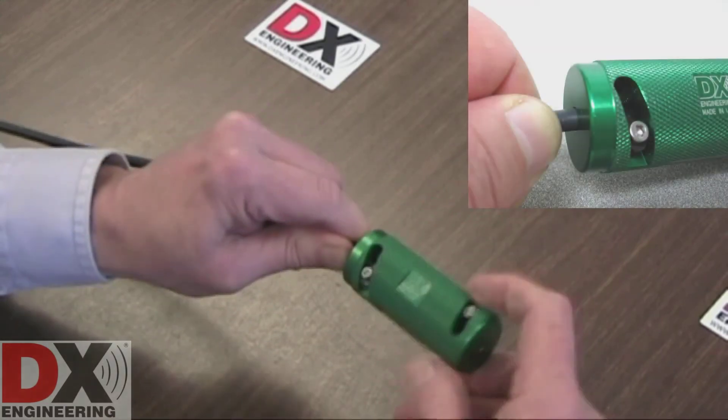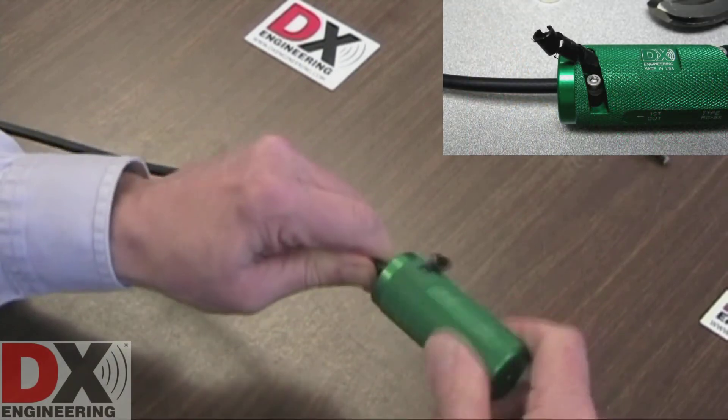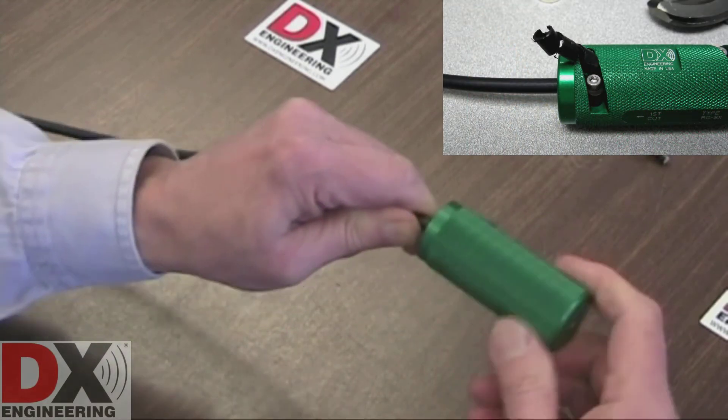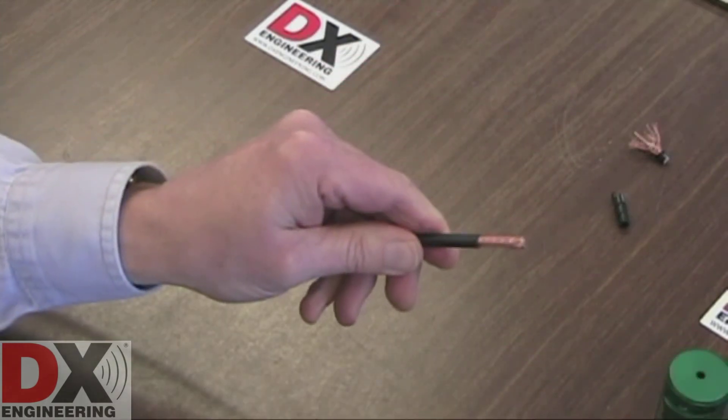Hold the coaxial cable close to the tool end and keep the cable straight, not bent. As you rotate the 808X tool, you will see the black jacket of the cable being ejected. You will feel the tool spin free when the cutting is complete. Remove the coaxial cable.